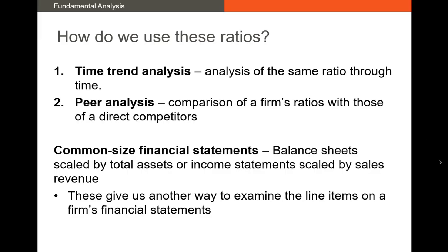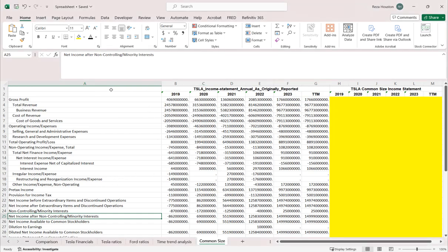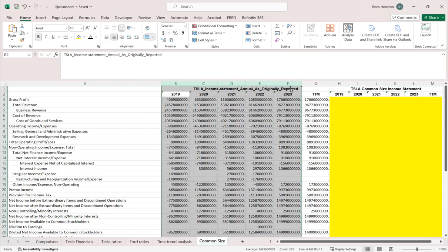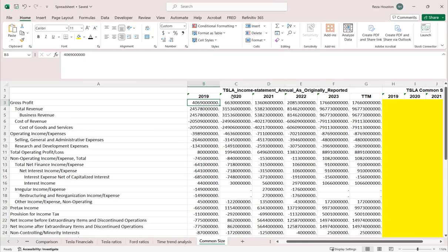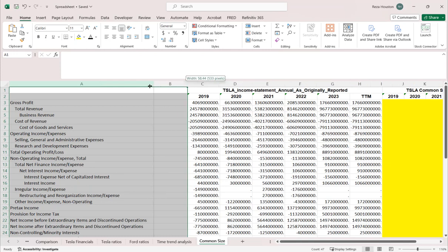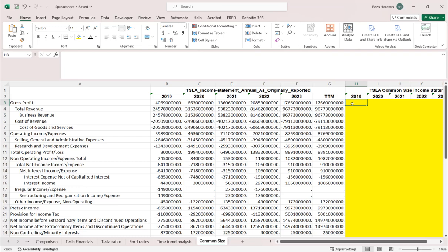One final topic: common size financial statements. Common size financial statements are incredibly useful to analysts — they allow us to see how line items differ across firms and also differ across the same firm through time. We divide everything on the balance sheet by total assets and everything on the income statement by our top line metric, sales revenue. Here I have Tesla's income statements from 2019 through 2023. To convert this into common size financial statements, all I'm doing is taking each line item and dividing it by total revenue.